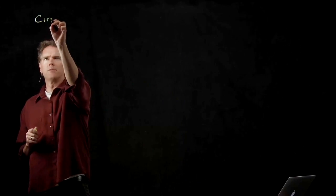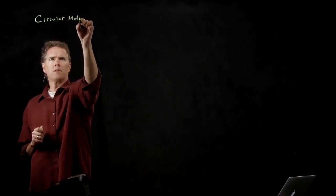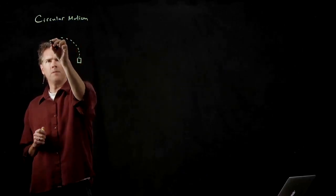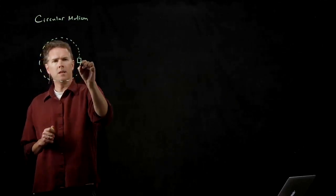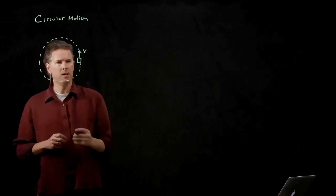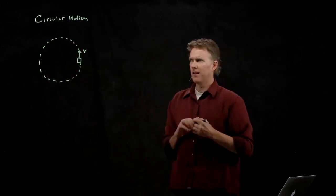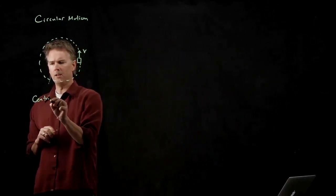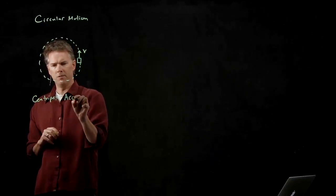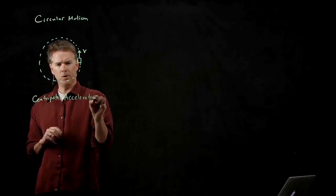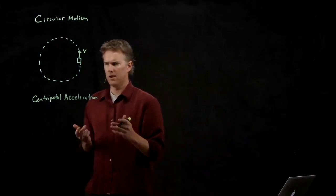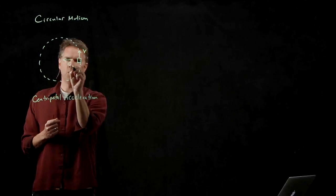What do we already know about circular motion? We know that if an object is moving in a circle, even if it's moving at constant speed v, is that thing accelerating? Yes, it is, and we call that centripetal acceleration. And which way does it point? Towards the center of the circle. Centripetal acceleration is towards the center of the circle.